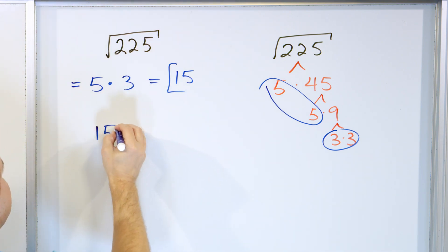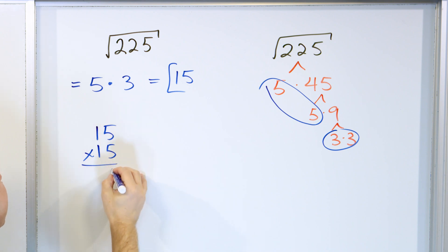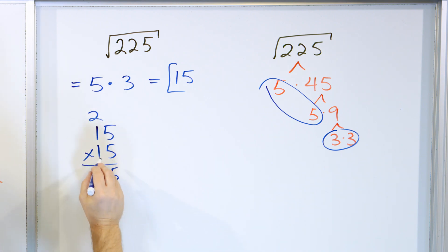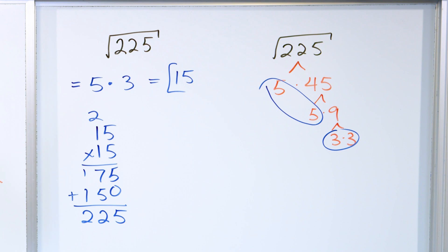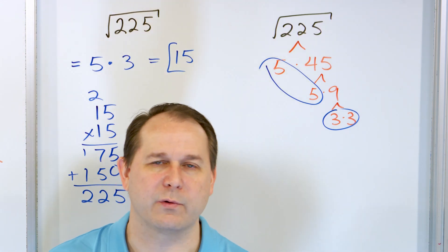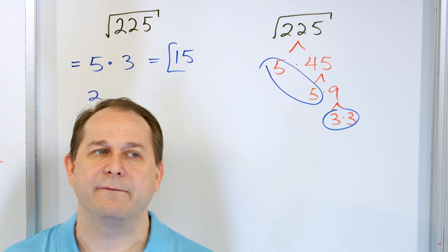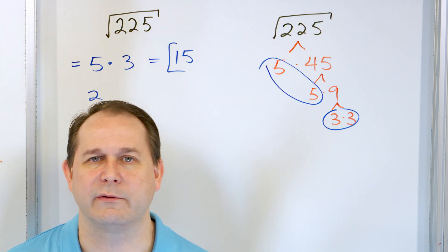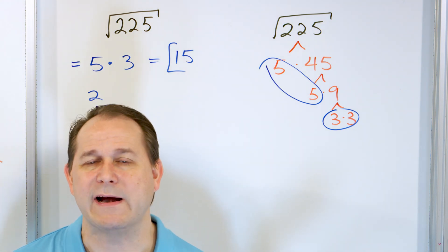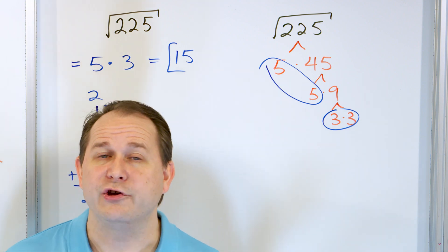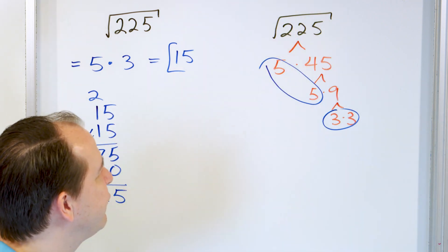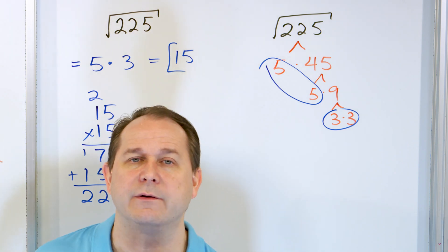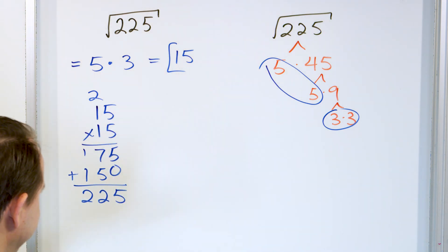We can check our work by multiplying 15 times 15: 5 times 5 is 25, carry the 2, giving 225. So 15 times itself is 225. Most people won't remember that from multiplication tables, so you have two options: use a calculator, or use a factor tree. With a factor tree, you just break the number down until you reach the prime numbers, then pull out one number for every pair you find.